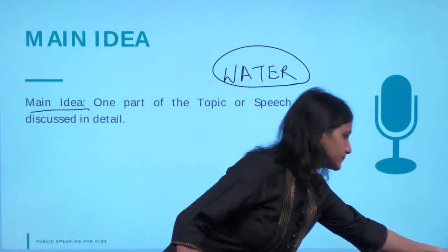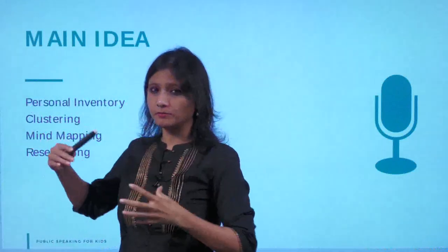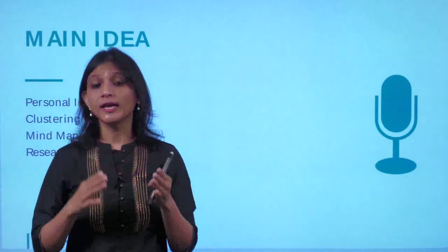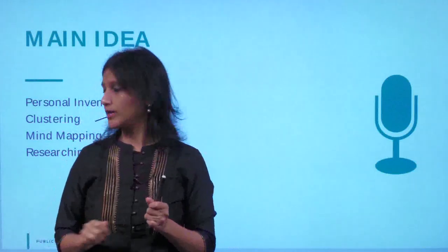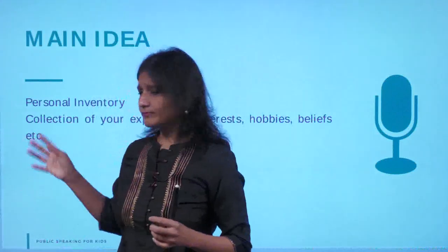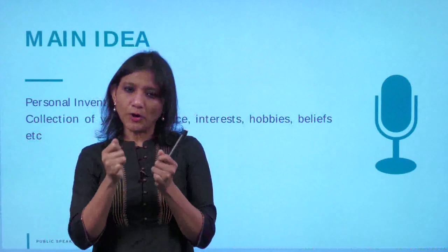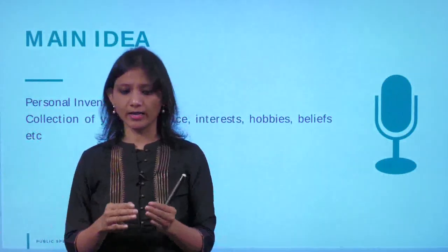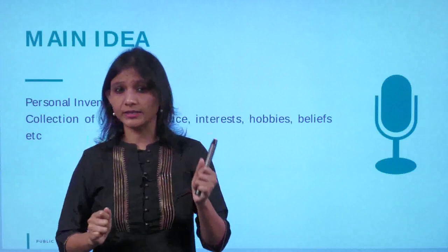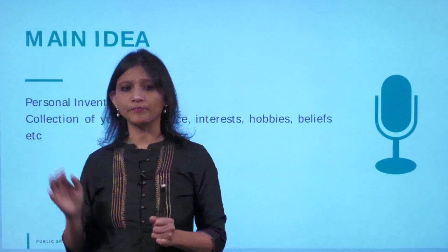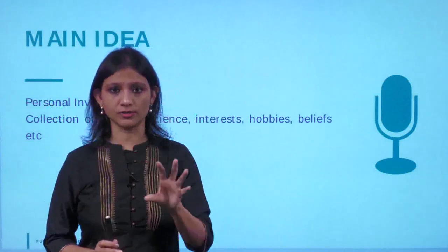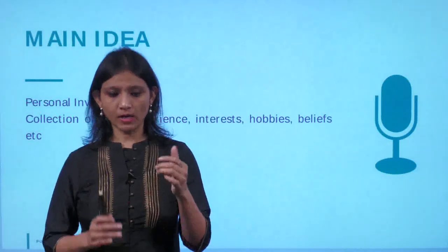You can see here that there are certain points written: personal inventory, clustering, mind mapping, and researching. These are the tools or techniques we are going to use to find our main ideas from the chosen topic. I'll explain each one in detail. Personal inventory is when I create certain pointers for myself. You'll be taken back to the same process we used when choosing our topic — thinking about our beliefs, faiths, interests, and knowledge — and we'll apply it now to choose the main ideas.